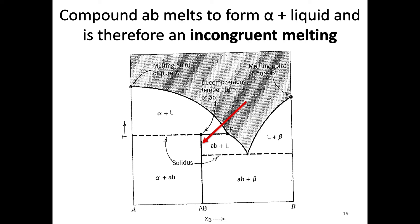We saw congruent melting, where a solid goes to liquid with no change in composition. As you might expect, there are also cases where composition does change — and the term for that is, not very creatively, incongruent melting. In this example with another compound AB on a different diagram, heating AB along its composition line eventually reaches a point where it decomposes: above that point we have alpha and liquid. So AB transforms into two different phases, which by definition cannot have the same composition — making it an incongruent melting compound.